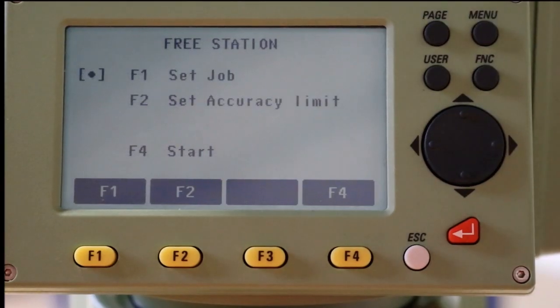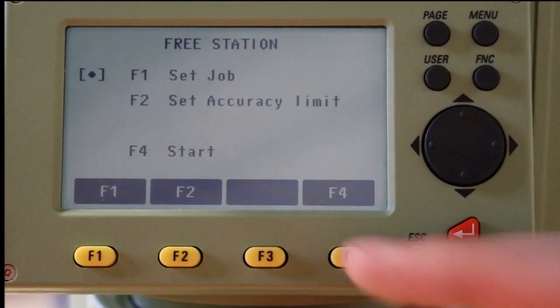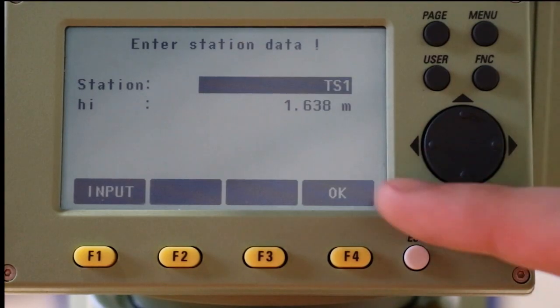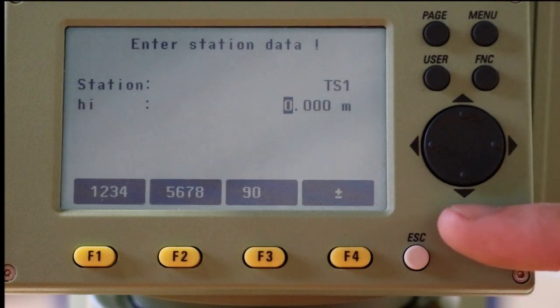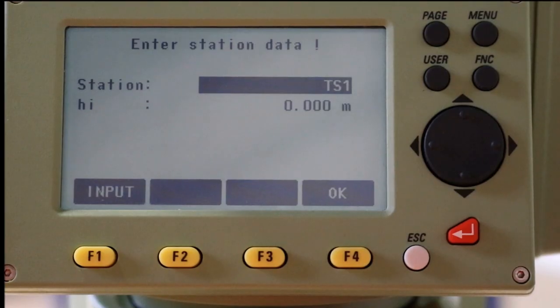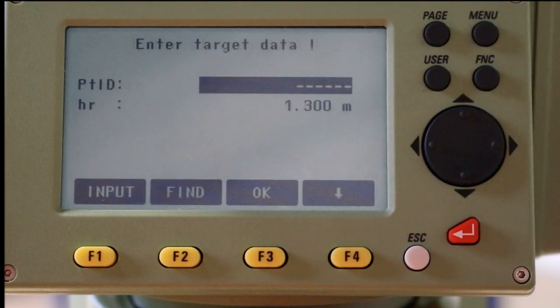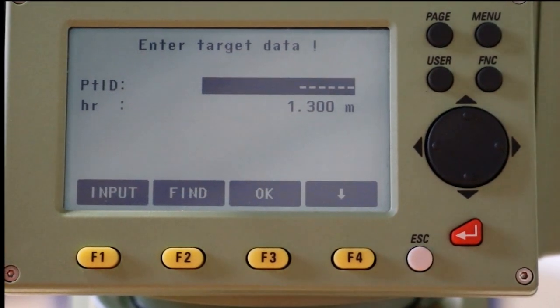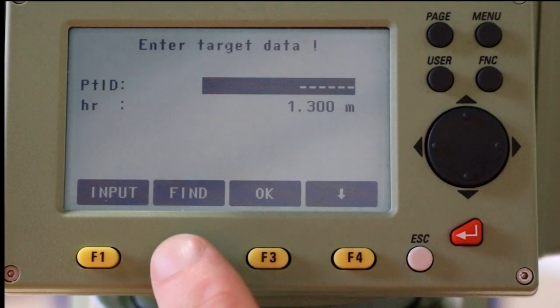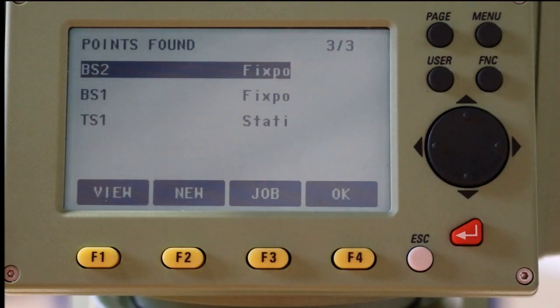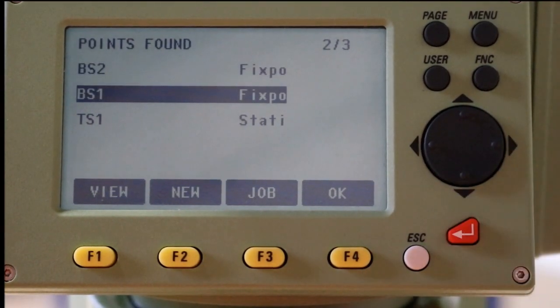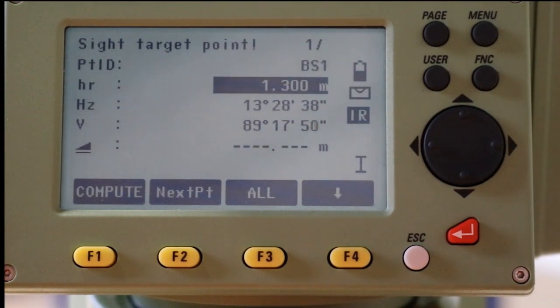When setting up over an unknown point, create a station name, TS1 in this case, and put zero as the height of the instrument. Select the find option for the previously saved station data you wish to use. It is considered good practice to measure these points in the order they appear while turning in a clockwise direction. You should also enter the height of this point as zero.